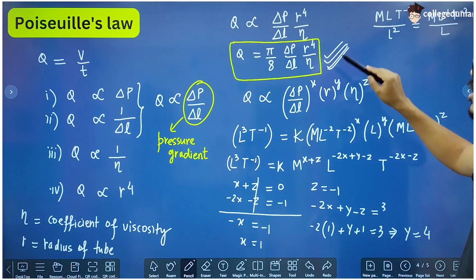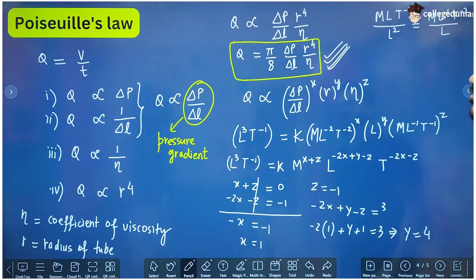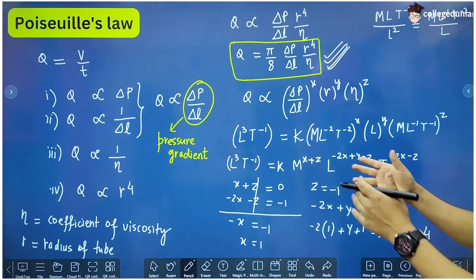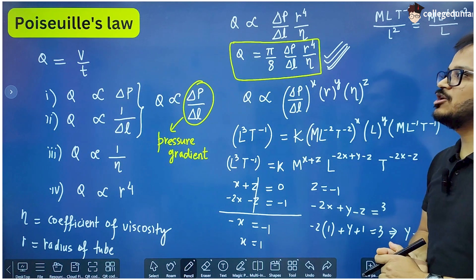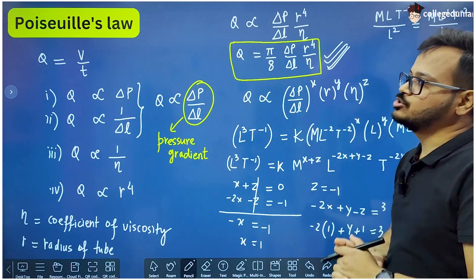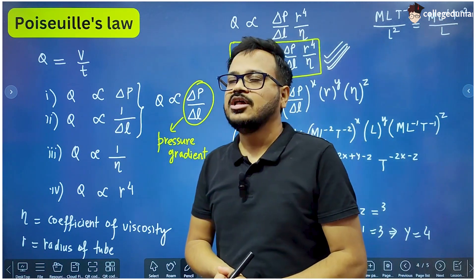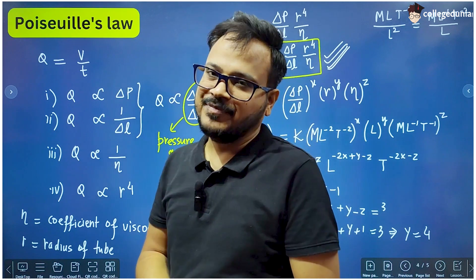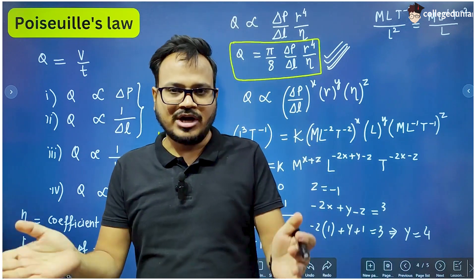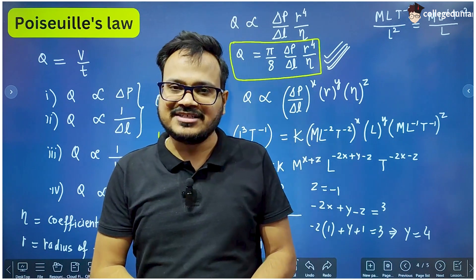These are the assumptions that Poiseuille used for this formula. This is a very important formula in class 11 physics — not only the derivation but the numerical part is also very important. I'll meet you in the next lecture.